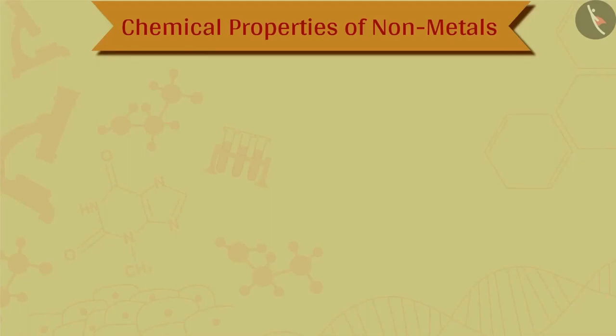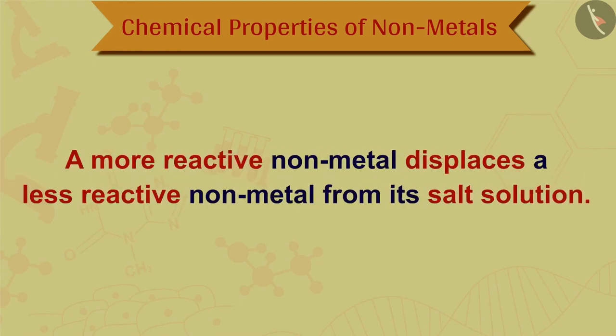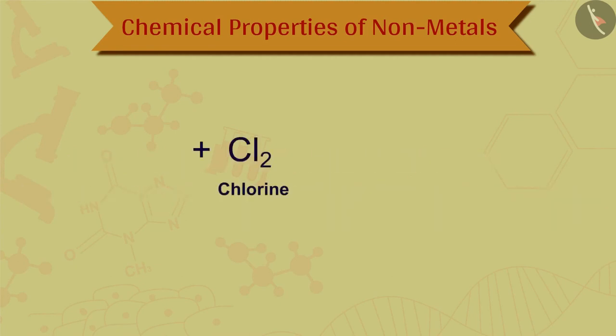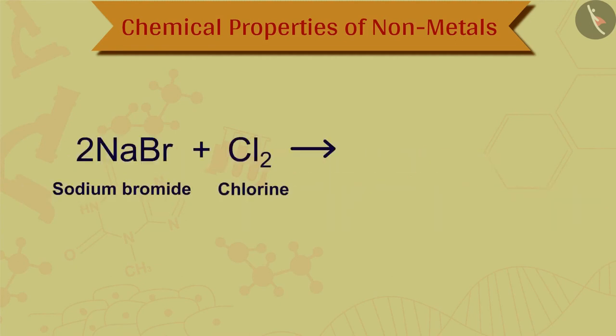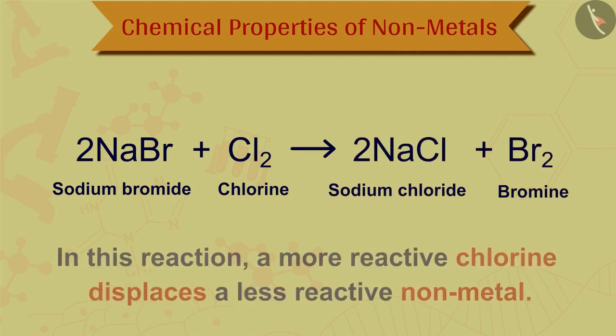The next reaction we are about to study is the reaction of non-metals with salt solutions. This is one of the most fascinating reactions, as a more reactive non-metal displaces a less reactive non-metal from its salt solution. For example, when chlorine is passed through a solution of sodium bromide, then sodium chloride and bromine are formed. In this reaction, a more reactive chlorine displaces a less reactive non-metal from its solution.